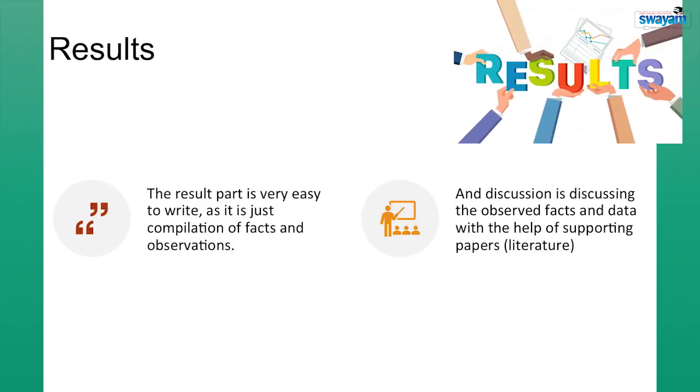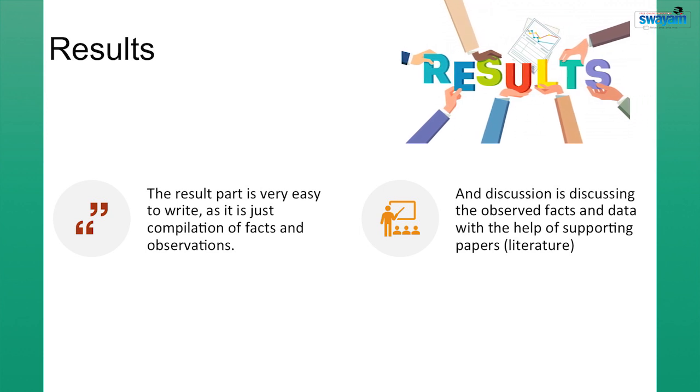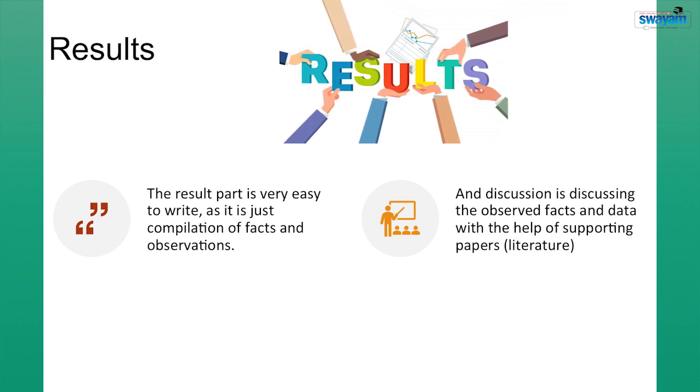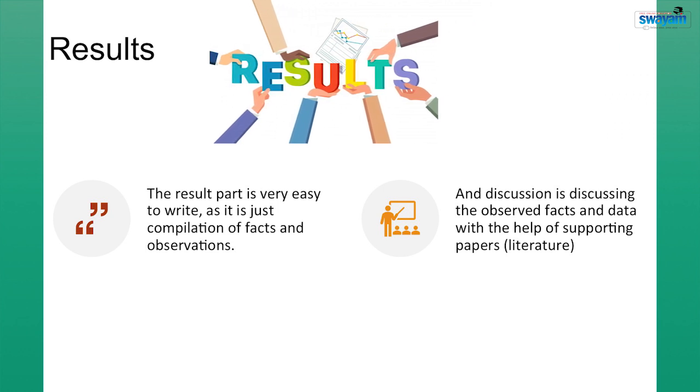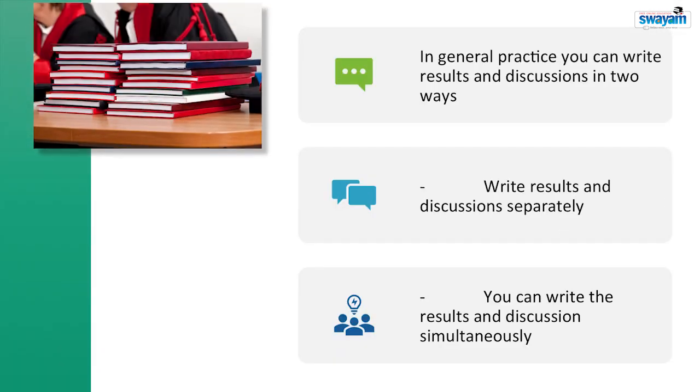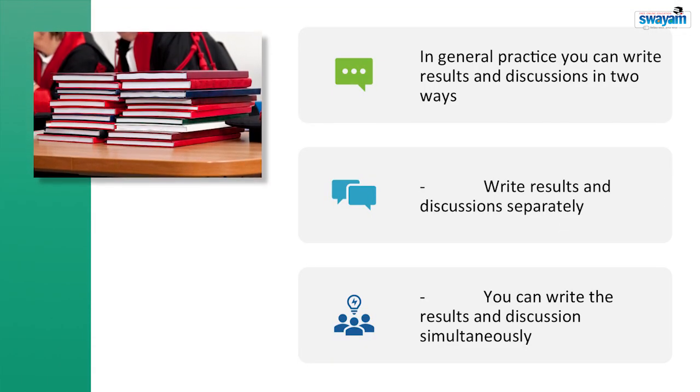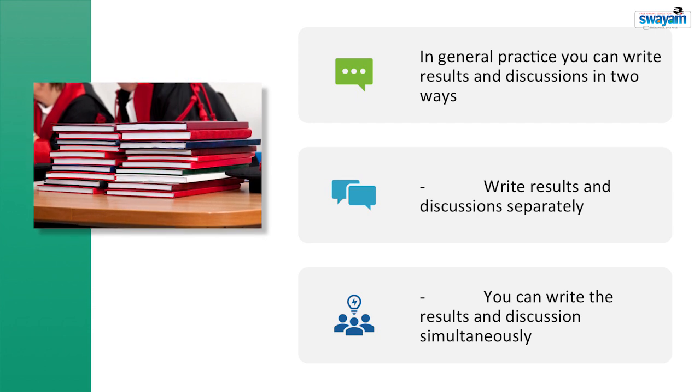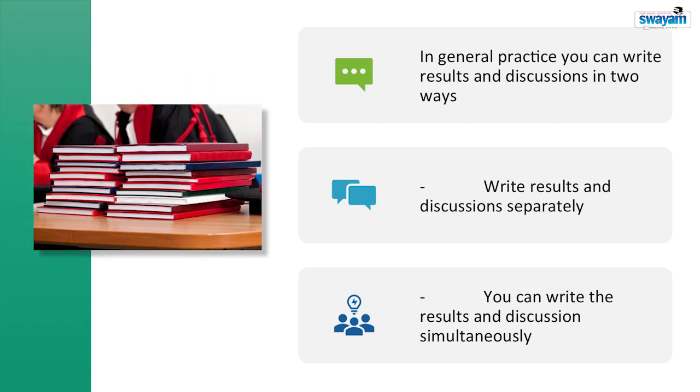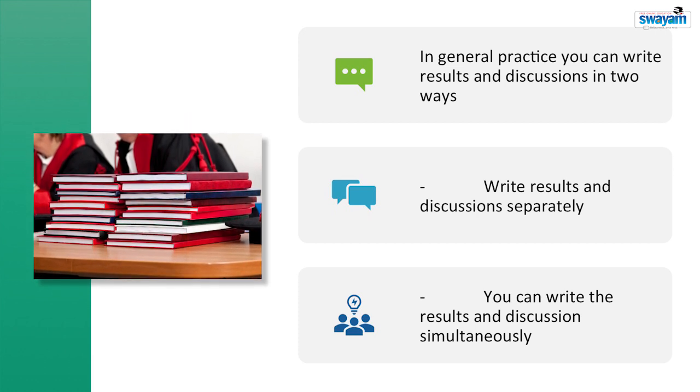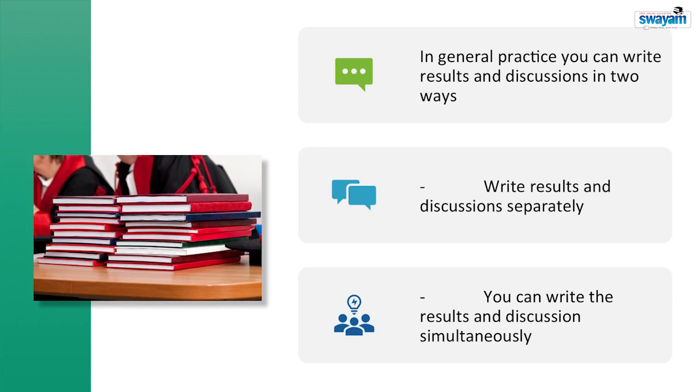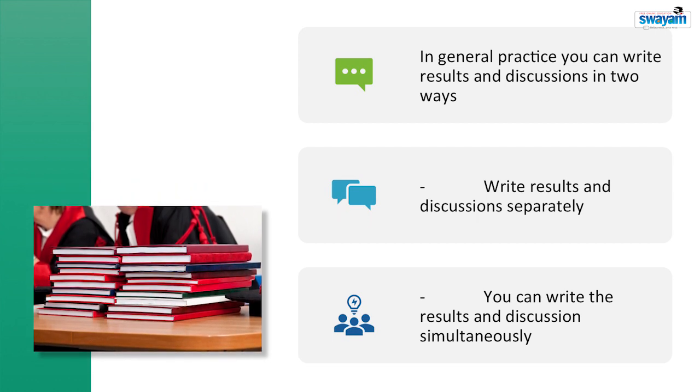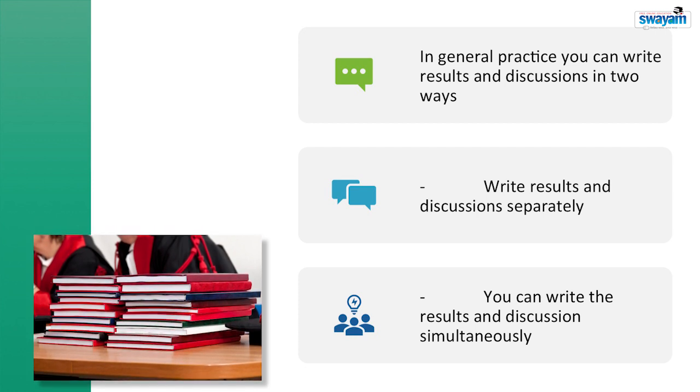Now we move to the results. The result part is very easy to write as it is just compilation of facts and observation and discussion is discussing the observed facts in data with the help of supporting papers literature. In general practice, you can write results and discussion in two ways: write results and discussion separately or write results and discussion simultaneously, or there may be specific guidelines of writing the same. It depends or you may have to follow the instructions of your supervisor, or if you are a supervisor, then plan it and tell your scholar to follow. But in any way, it is up to you that how effectively you can present it so that it is very easy to understand.